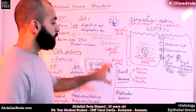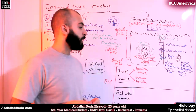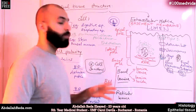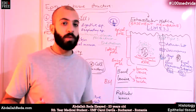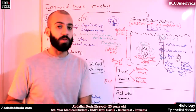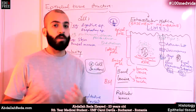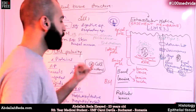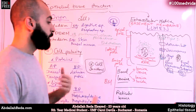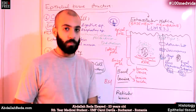The basement membrane cannot be seen properly under the light microscope unless it's one of the big carriers or vessels. For example, we can see it in the trachea, in the urinary bladder. But if you have a thick layer of epithelial tissue, then you will be able to see the basal membrane under the light microscope; otherwise you're not going to be able to see it. So this classification depends on their appearance under the electron microscope.